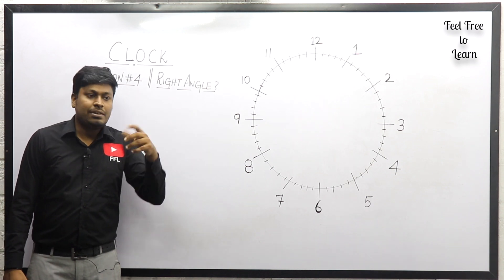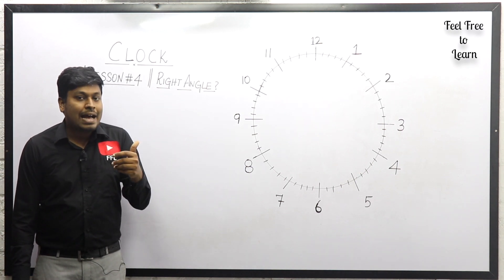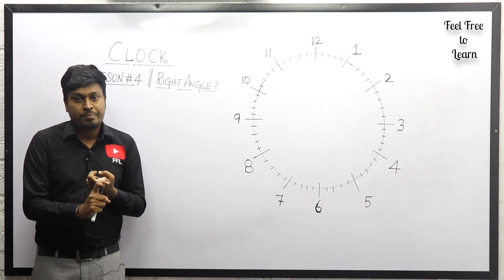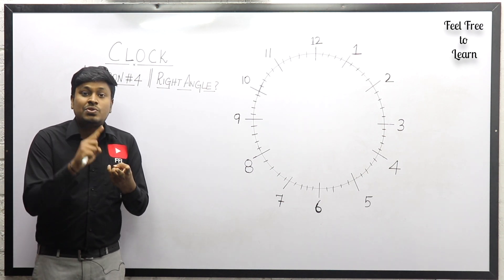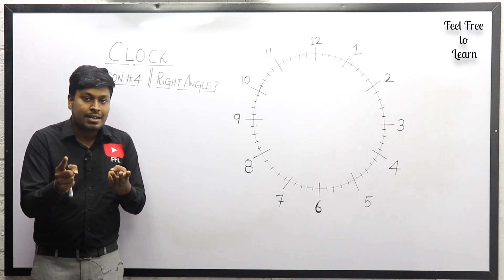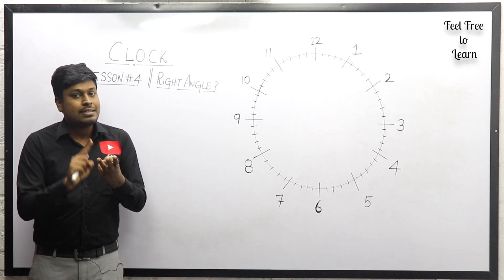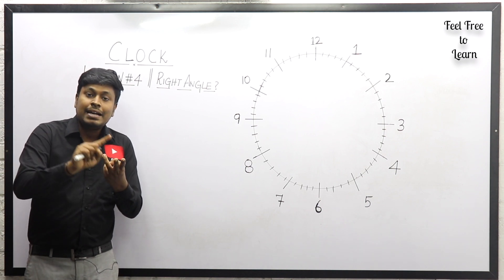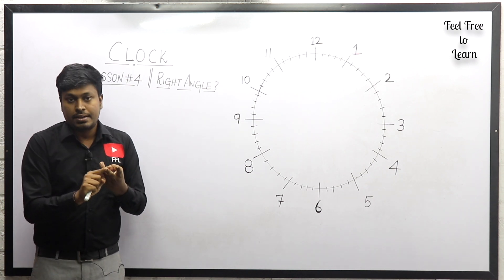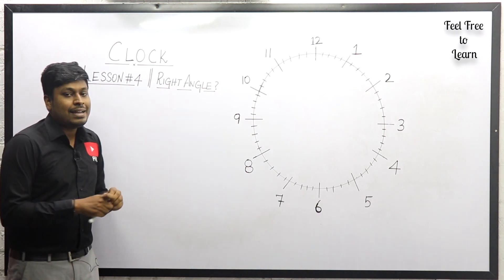In lesson number one, they give you some timings and your target is to find the angle between the hour hand and minute hand. Lesson number two is where both hands are together, angle zero degrees. Lesson number three is where hour and minute hands are in opposite direction, angle 180 degrees. Here in lesson number four, both hands of the clock should be at a right angle.